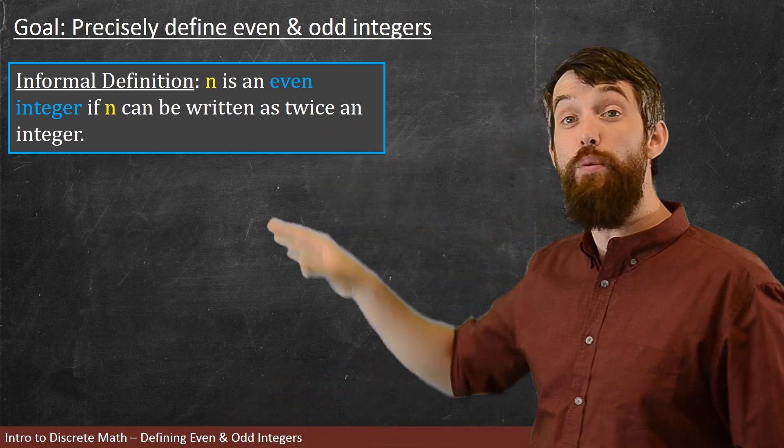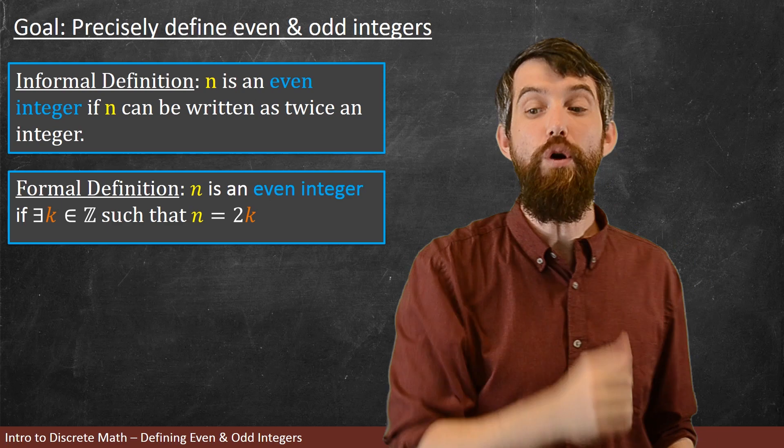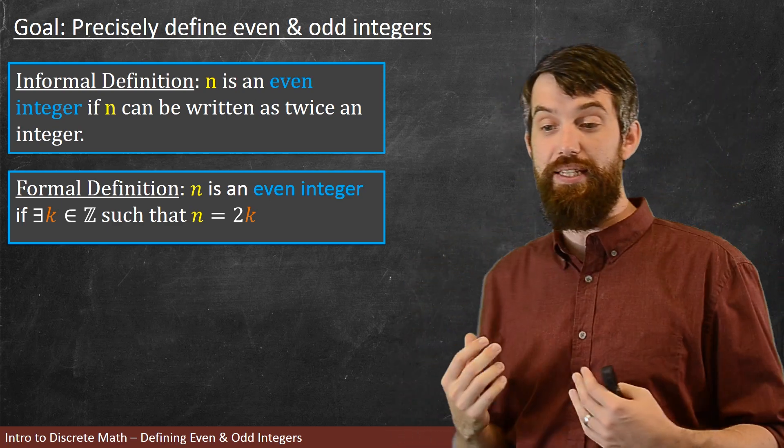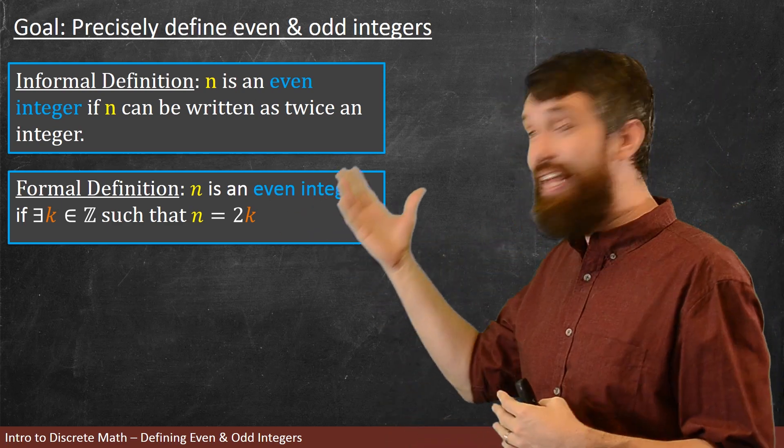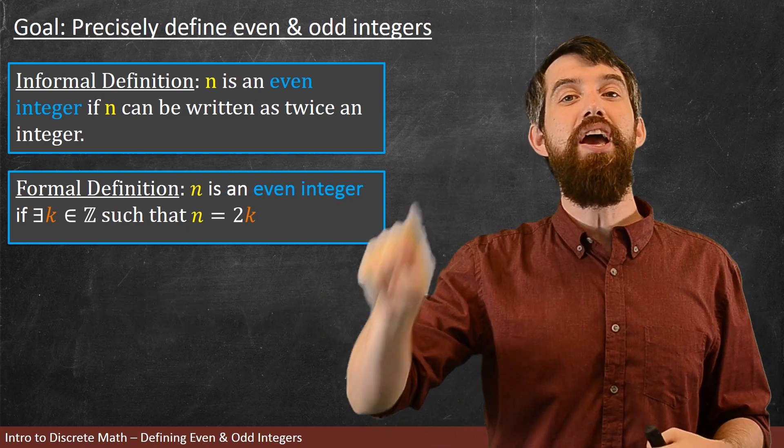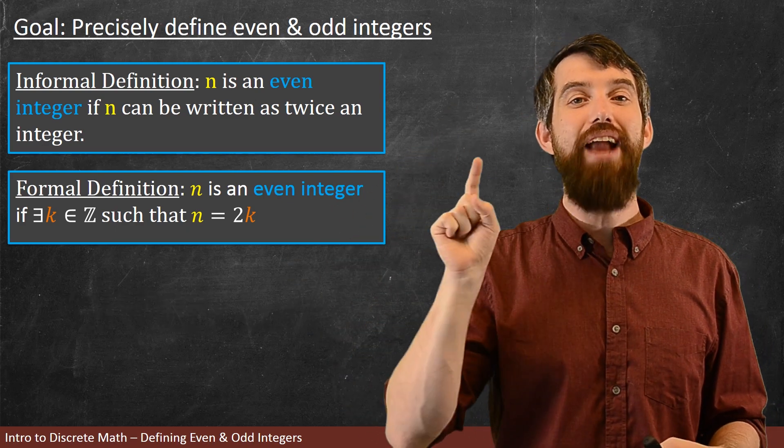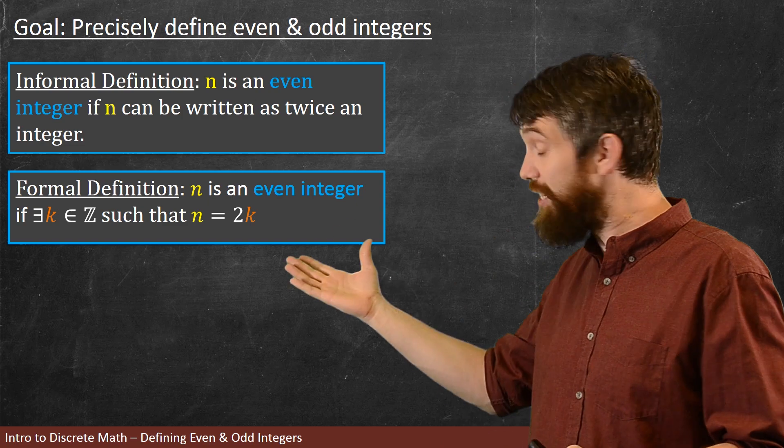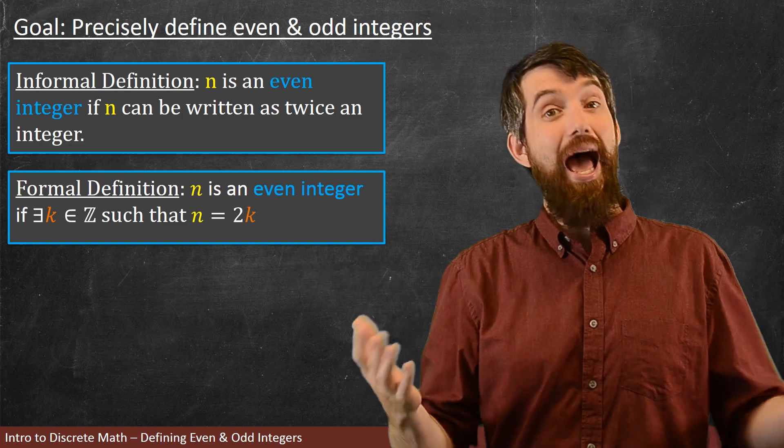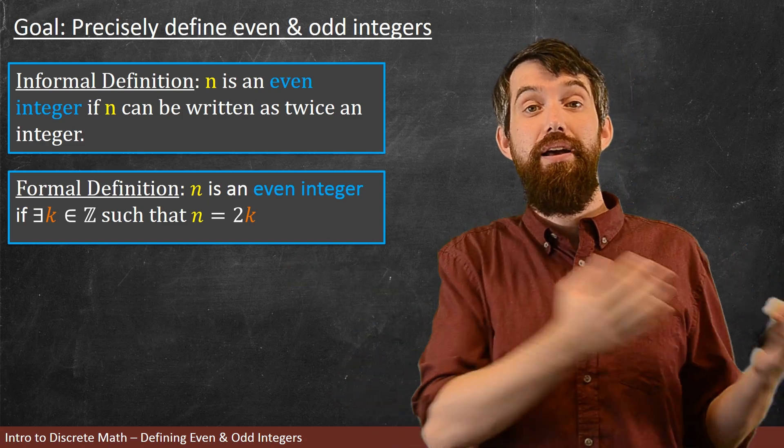So if I want to take this informal definition and make it into a formal one, I might write something like this. I would say that n is an even integer if there exists another integer k, so there exists a k in the integers, that has the property that n is twice k.